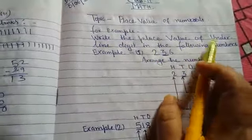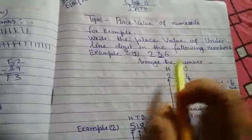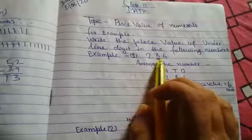Write the place value of underlined digits in the following numbers. Example first, 236.